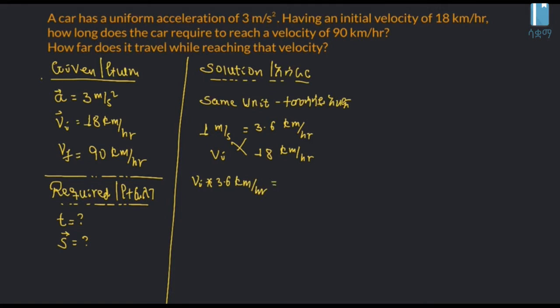We convert units: Vi times 3.6 km per hour equals 10 m per second times 18 km per hour, giving us the initial velocity in m/s.